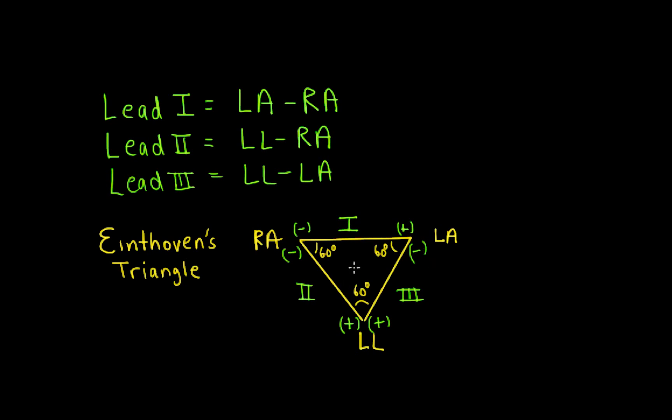If you look at the way the leads are organized, you can see that lead 1 plus lead 3 equals lead 2. The left arm electrodes cancel out when you add lead 1 and lead 3, and you're left with left leg minus right arm, which is lead 2. This relationship — lead 1 plus lead 3 equals lead 2 — is known as Einthoven's equation. It's good practice that when you're looking at an ECG, you quickly scan leads 1, 2, and 3 to see if this relationship holds. If it doesn't, the electrodes may not have been set up properly.